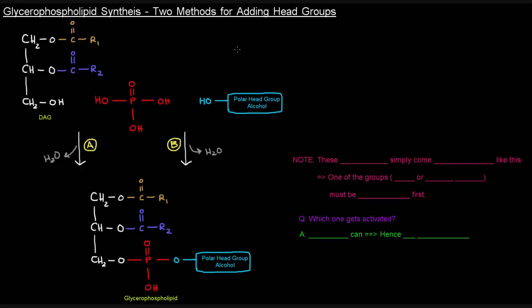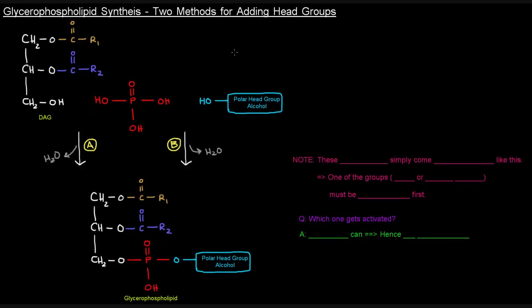Now that we've discussed the overview of how glycerophospholipids are made, I want to consider how the head group is actually being added on. So if we consider this: we have diacylglycerol, phosphoric acid, and some alcohol that will be attached to the polar head group. These three things have to come together to make the glycerophospholipid, which involves dehydration reactions that link those components.